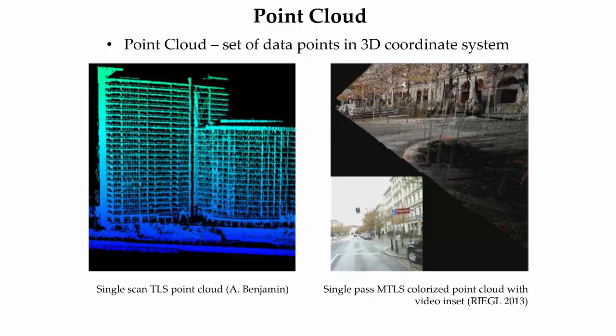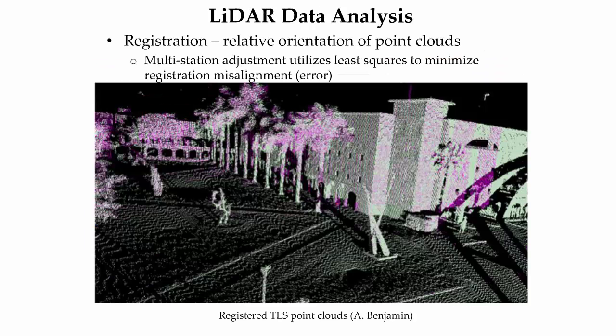A point cloud is a set of data points in a three-dimensional coordinate system. For stationary terrestrial LiDAR systems, shown in the image on the left, a raw point cloud is generated from a single scan. For mobile terrestrial LiDAR systems, as shown in the image on the right, a colorized point cloud is generated from one scanner on a single pass of the platform, with the points given RGB color values from simultaneously acquired imagery. This singular pass is usually referred to as a strip. To create a three-dimensional point cloud of the entire project area, multiple scan setups and strips are combined.